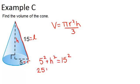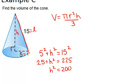So 25 plus h squared equals 225, which means that h squared equals 200, which means h equals 10 root 2. So now that we know both our height and our radius,